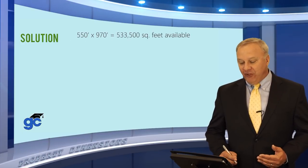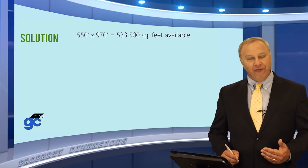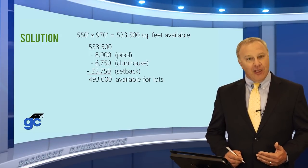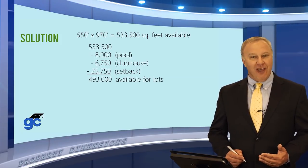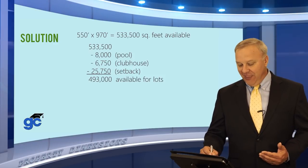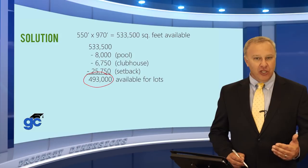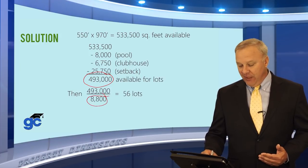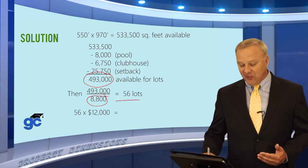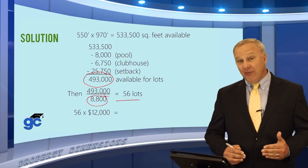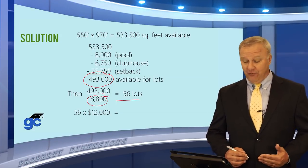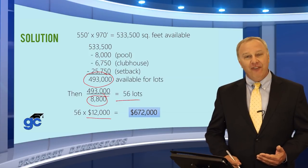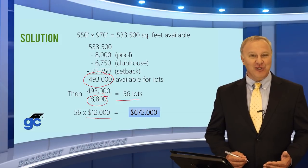The math: 550 × 970 = 533,500 square feet total. Subtract the pool (80 × 100 = 8,000 sq ft), the clubhouse (75 × 90 = 6,750 sq ft), and setbacks (25,750 sq ft), leaving 493,000 square feet. Each lot is 80 × 110 = 8,800 sq ft. Dividing 493,000 ÷ 8,800 = 56 lots. At $12,000 per lot, the builder realizes $672,000.